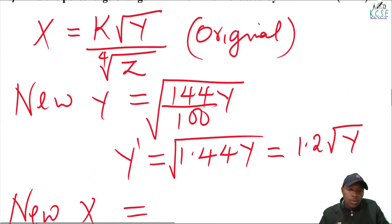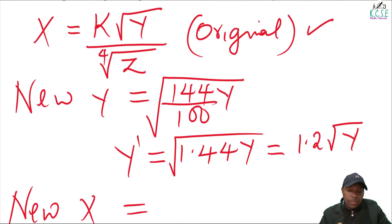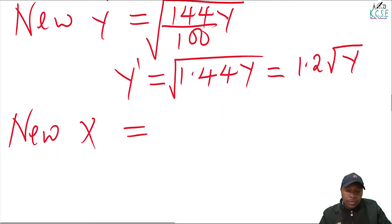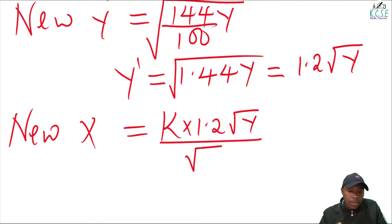The original value of x is k times the square root of y divided by the fourth root of z. So the new value of x will be k multiplied by 1.2, times the square root of y, divided by the fourth root of z.